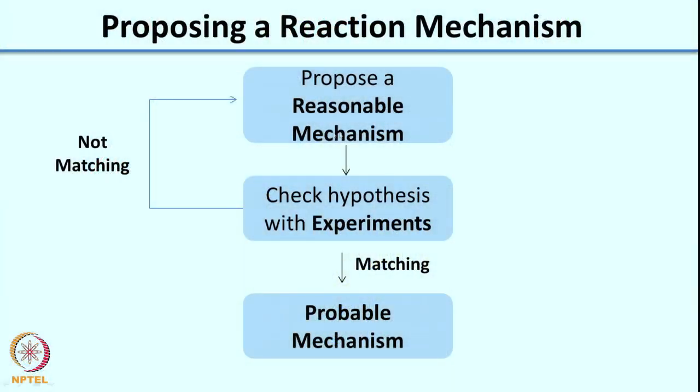As I told you in the last class as well as the first class, in this course we would be looking at proposing reasonable reaction mechanisms and checking the hypothesis using experiments. One set of experiments we looked at in earlier lectures was how you could use kinetics to determine how the reaction takes place — kinetics can be used to distinguish between multiple mechanisms and find out which is the reaction mechanism.